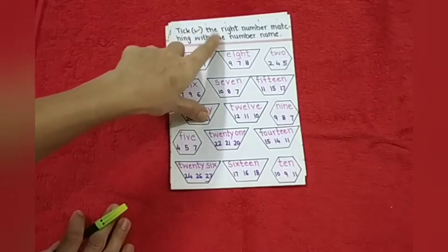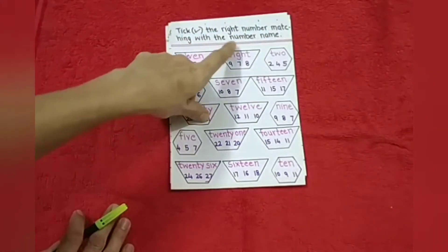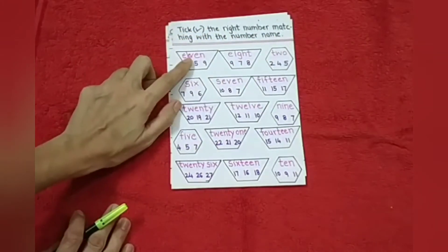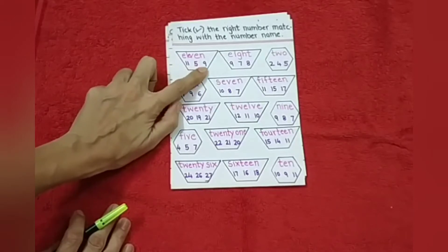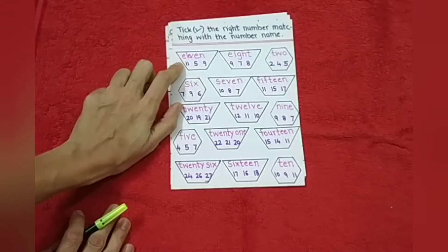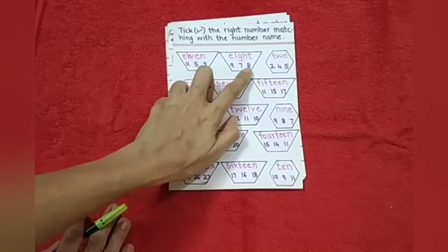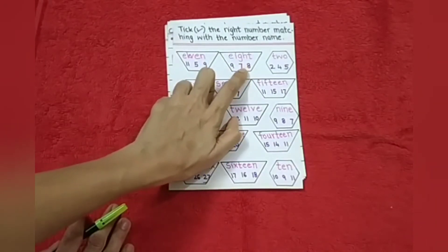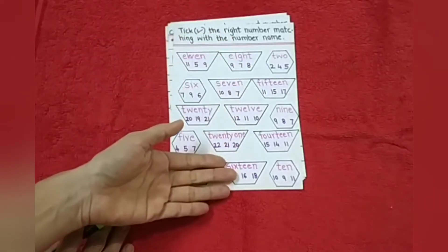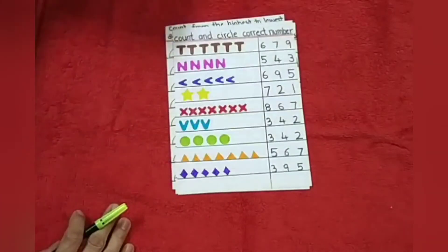After that, tick the right number matching with the number name. Here, the spelling is 11. They have to identify where is the 11 number. They just have to tick. Same way, 8 spelling is given here. They have to identify which is the number 8 and they have to tick. This way they will finish this worksheet.